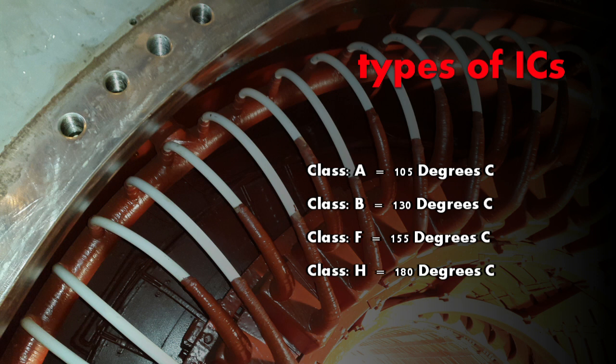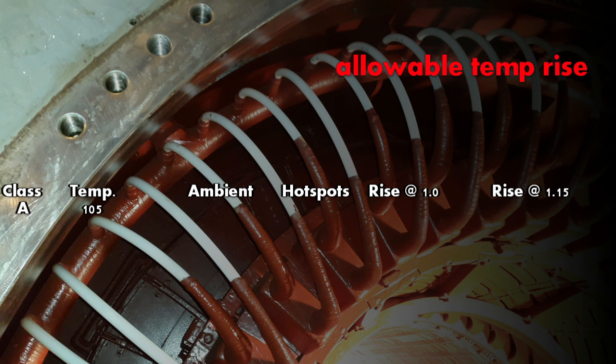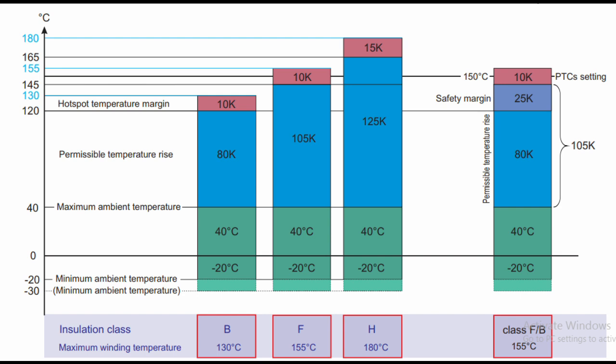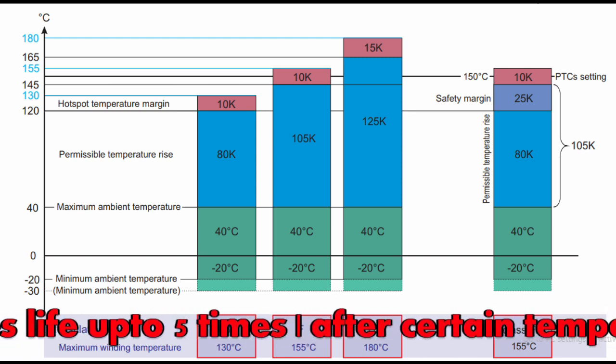Nowadays, the practice in industries is to address these classes in the form of permissible temperature rise. If we assume the ambient temperature to be 40 degrees centigrade and we take the hot spot temperature margin to be 10 degrees centigrade for B and F Class, and 15 degrees centigrade for H Class, allowable temperature rise will be 80 degrees for Class B, 105 degrees for Class F and 125 degrees for Class H. The industrial practice is to use Class F insulation with 80 degrees centigrade rise, which is allowable temperature rise of Class B insulation. It may be termed as Class FB. We have 80 degrees centigrade permissible temperature rise. What is the benefit of this? We have a 25 degrees centigrade safety margin in this. It increases the life of the motor by up to 5 times.